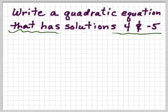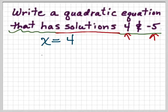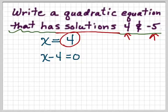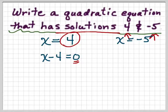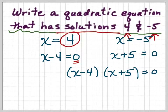So let's talk about the problem where we have solutions 4 and negative 5. If x equals 4, that's where we're starting — what would be the ending of solving a quadratic equation. We know we have to set everything equal to 0, so we subtract 4 from both sides: x minus 4 equals 0. That's our factor. And for x equals negative 5, if we add 5 to both sides, we get x plus 5 equals 0.